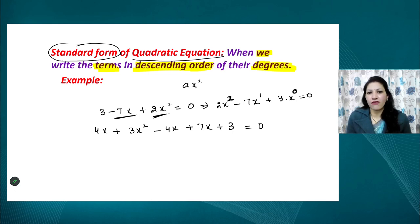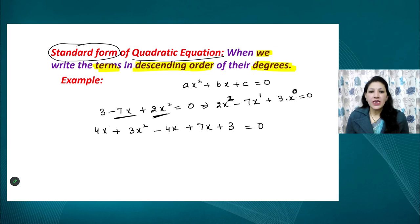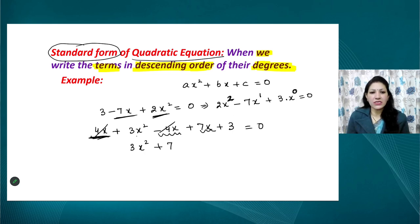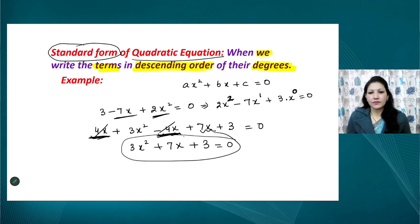So whenever we write the standard or general form of a quadratic equation, we write the highest degree term first, then degree one, then degree zero. For the equation 4x² + 4x - 4x + 7x + 3 = 0, we observe that terms with x can be combined: 4x and -4x cancel, leaving 3x² + 7x + 3 = 0 as the standard form.